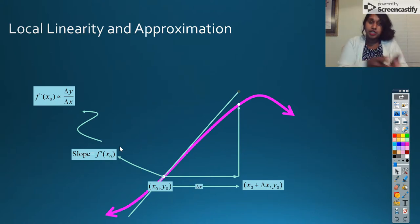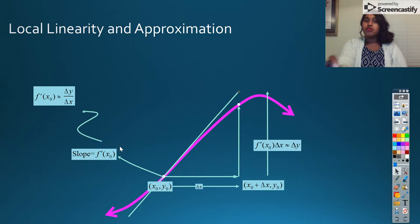Slope's formula is change in Y over change in X. So I can take that and I can solve forward. I can solve for delta Y. I can take that delta X up, bring it to the other side, and I get this equation right here. So now I've taken a moment to solve for delta Y.